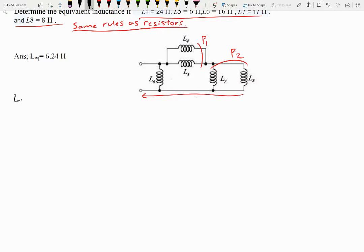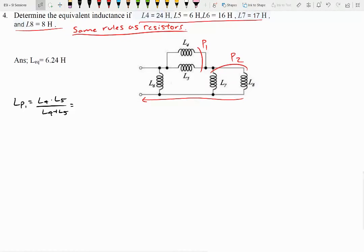So L parallel one is going to be L4 times L5 over L4 plus L5. So it'd be 24 times 6, 24 plus 6. Give us 4.8 henrys.